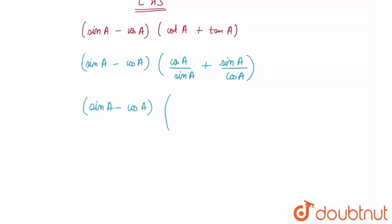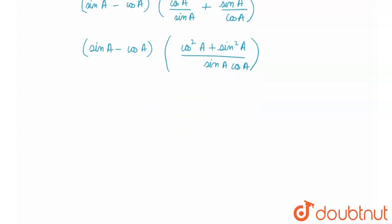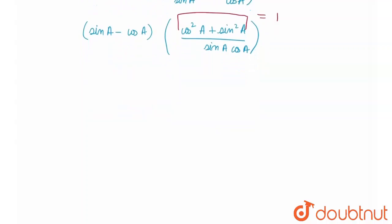This would be equal to cos square A plus sin square A whole divided by sin A cos A. And I know that sin square A plus cos square A is equal to one, so I will replace it with one.